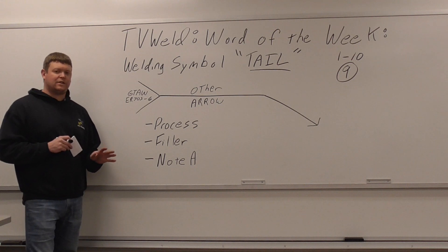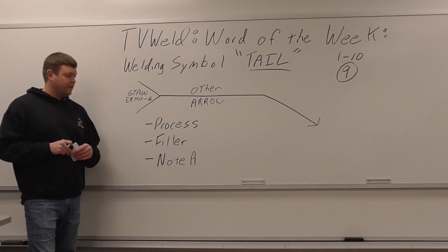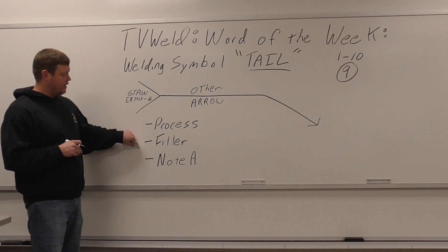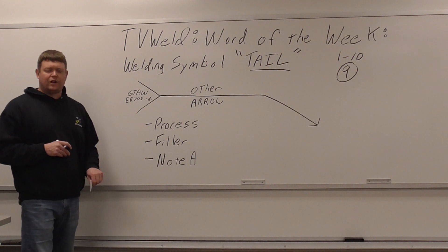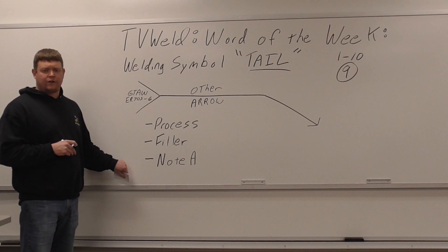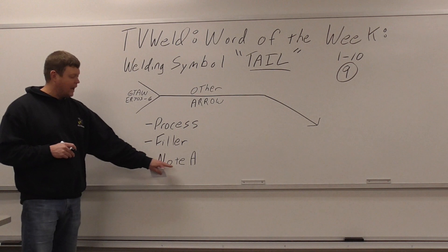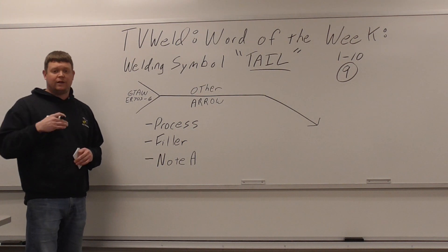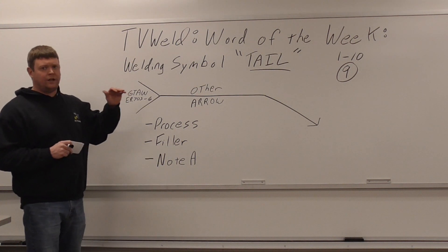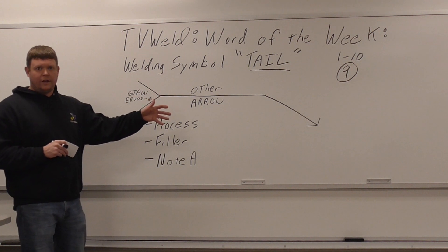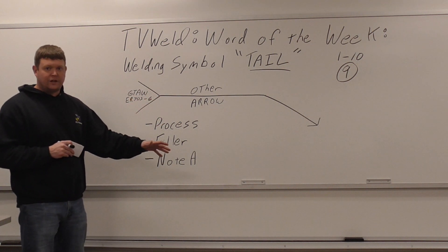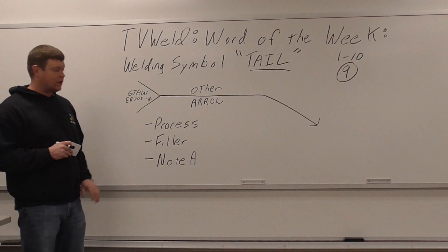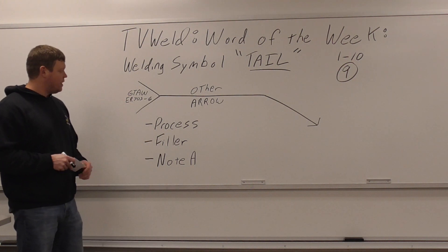There were four things that most sources said about the tail. These three: the process, the filler, and general references to other things on the actual print. So I wrote Note A — if there's a note on the print that's essential to getting this weld done, they're referring you to that note so you don't miss it. They put it on the tail so you can't miss it.